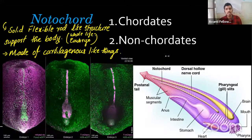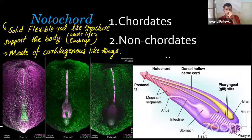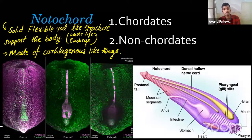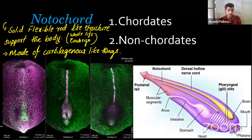Hyaline cartilage is called hyaline because it is almost transparent. The notochord is made up of this kind of cartilage-like material. It's called notochord — you can see it in the developmental stage in some fish. We can find it in several organisms, and today we will learn about cartilage and related things.